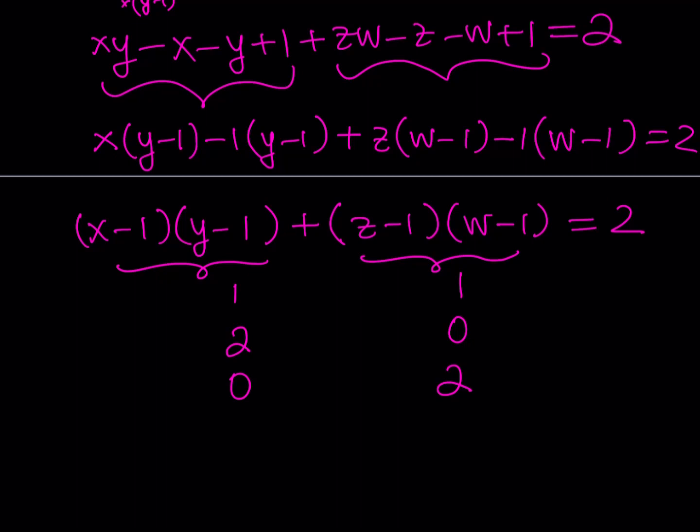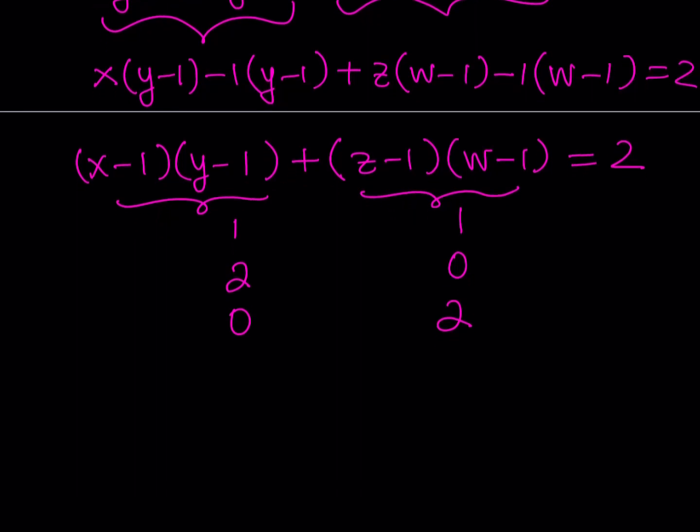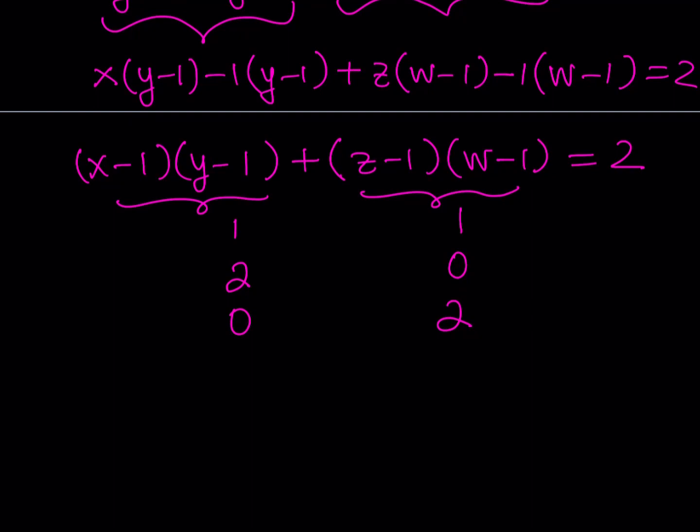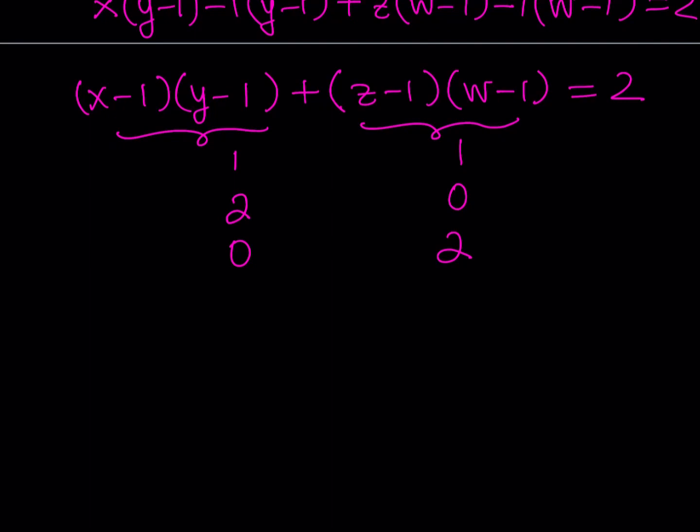Now we're going to be looking at each case basically separately. So for example, let me show you a couple of them, and I'm just going to write all the ordered quadruples as a solution. So for example, if you say that I'm just going to assume that (x minus 1) times (y minus 1) is equal to 1, which implies that (z minus 1) and (w minus 1) also multiply to 1.